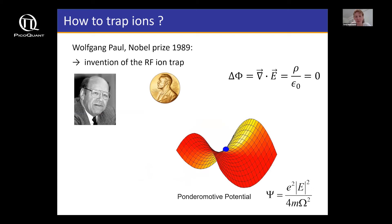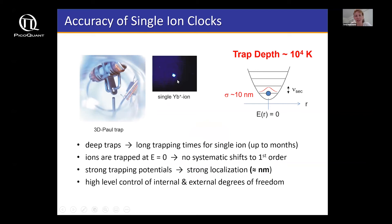As simple as that. For this, Wolfgang Paul received the Nobel Prize in 1989, and this is what we call the Paul trap. It's a simple trick but extremely powerful and used everywhere nowadays, even for mass filters. This is how the ion trap looks for a single atom.